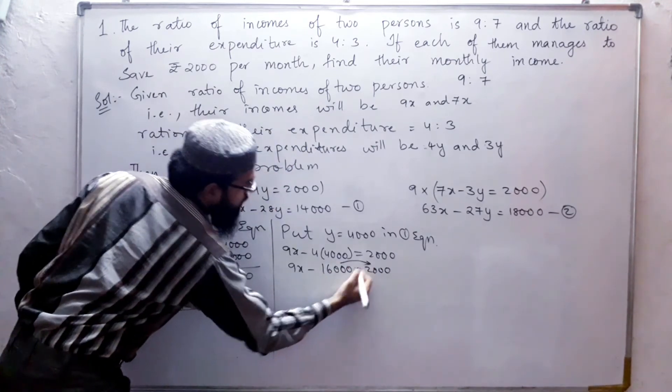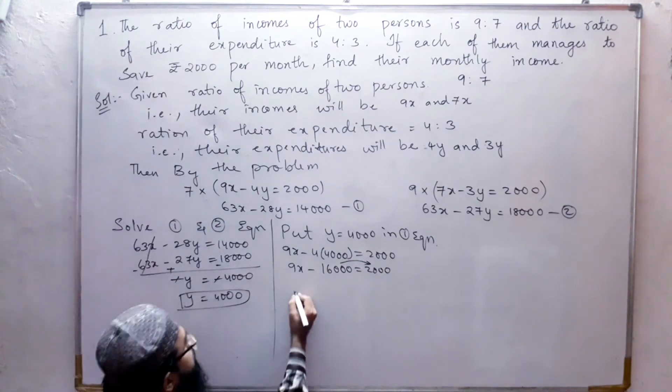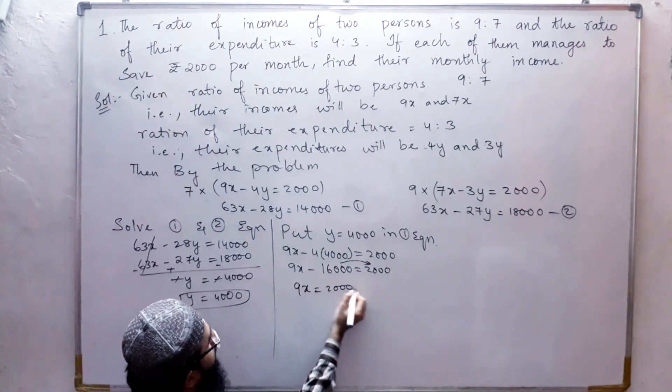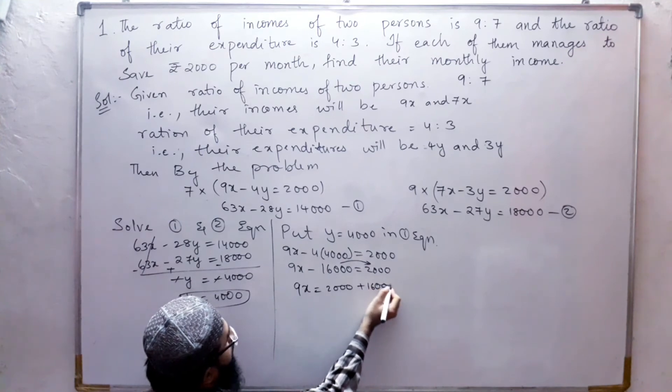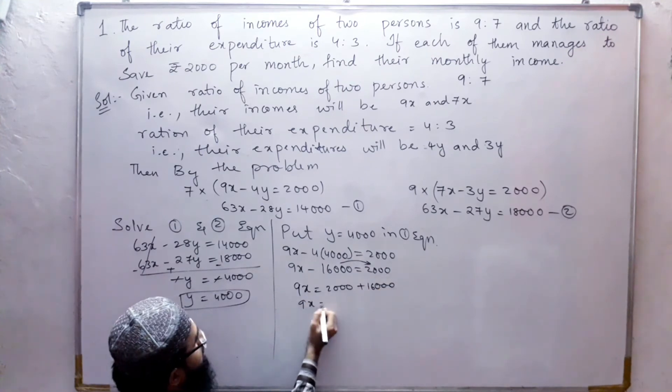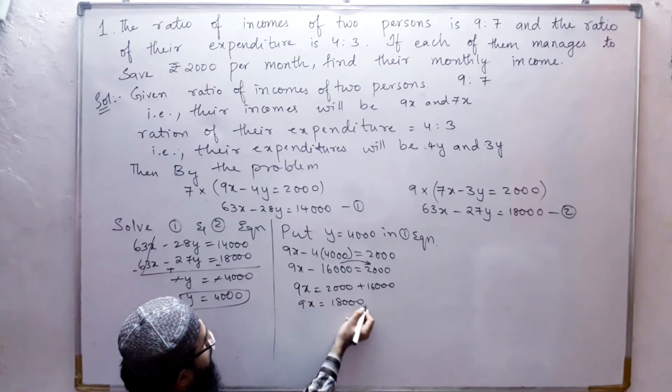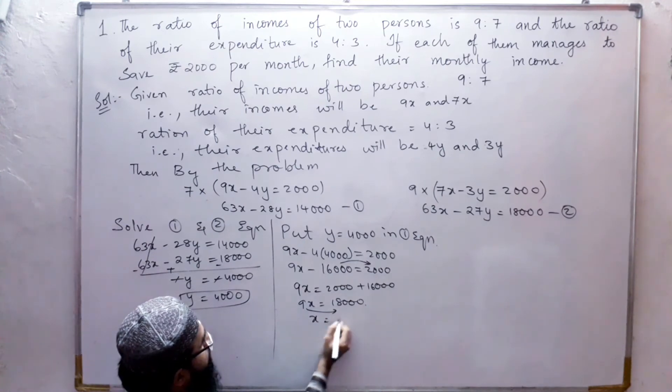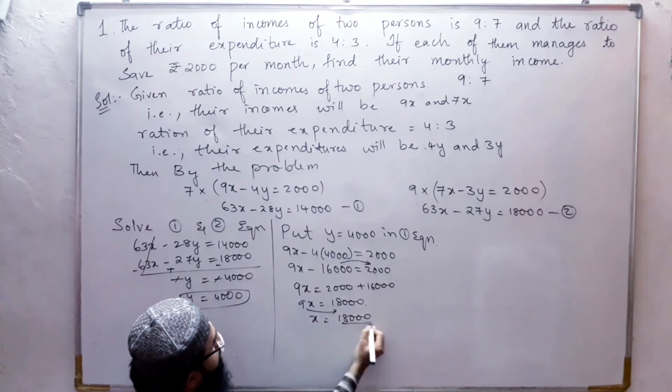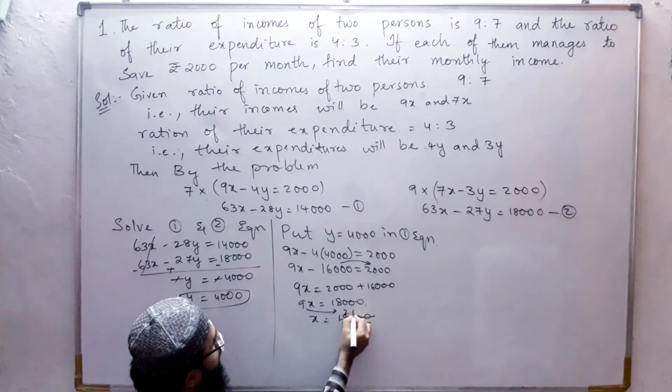The 16,000 goes to that side. 9x equals 2000 plus 16,000. 9x equals 18,000. 9 goes down. x equals 18,000 by 9. The answer is 2000. x equals 2000.